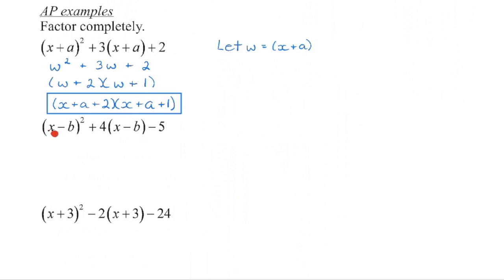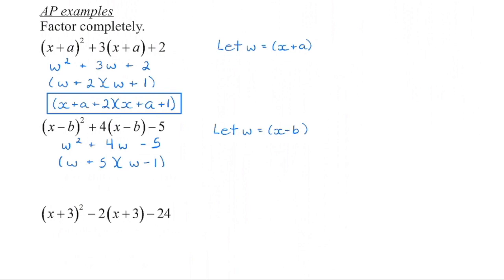The second one — we again have a squared term as a binomial. Do we have the same thing in each bracket? Yes. Let's try the same strategy: let w equal what's in that bracket and substitute it in. This is very easy to factor. What are two numbers that multiply to negative 5 and add to positive 4? Positive 5 and negative 1. So we factor it, and remember to substitute back: w equals x minus b. Fill that in and check for any like terms in the brackets — we don't have any, so they're finished.